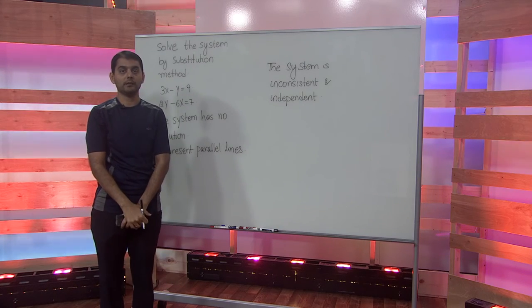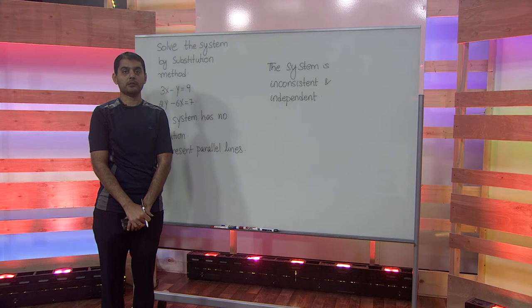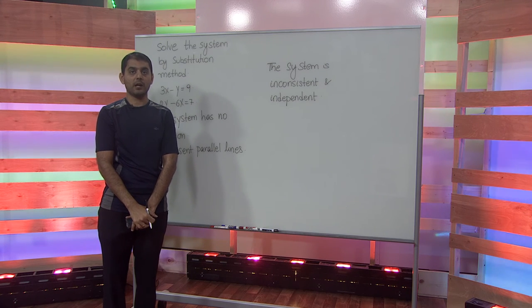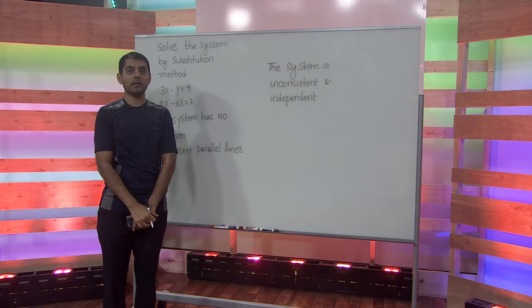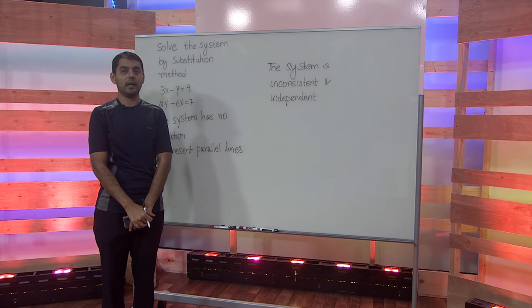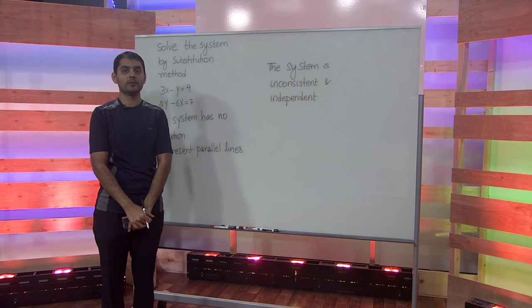To summarize, we tried to solve the system of equations using the method of substitution. We arrived at a contradiction, hence we concluded saying that these two equations represent parallel lines and the system has no solution.